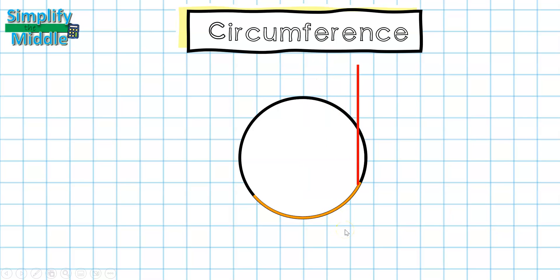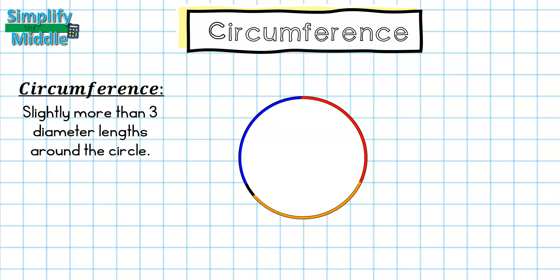I'm going to place this diameter around the circle and it looks like there's space for a third one. So let's place our third one around the circle. I have fit three diameters with space for a little bit more right here. That means I can define my circumference so far as slightly more than three diameter lengths around the circle.